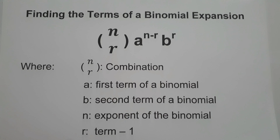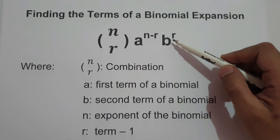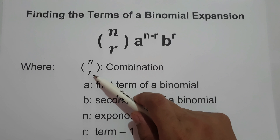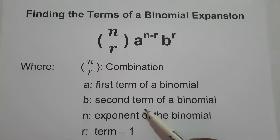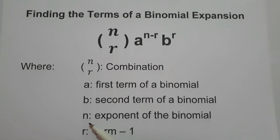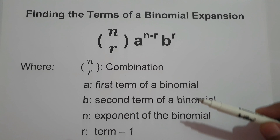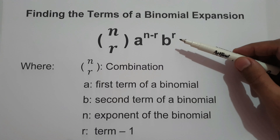Welcome to another video. In this video, we are going to talk about how to find the terms of a binomial expansion. To find the terms of a binomial expansion, we are going to use the formula n taken r times a raised to n minus r times b raised to r. When n taken r, that is a combination, a is the first term of a binomial, b is the second term, n is the exponent of the binomial, and r is the term that we are looking for, using the formula term minus 1.